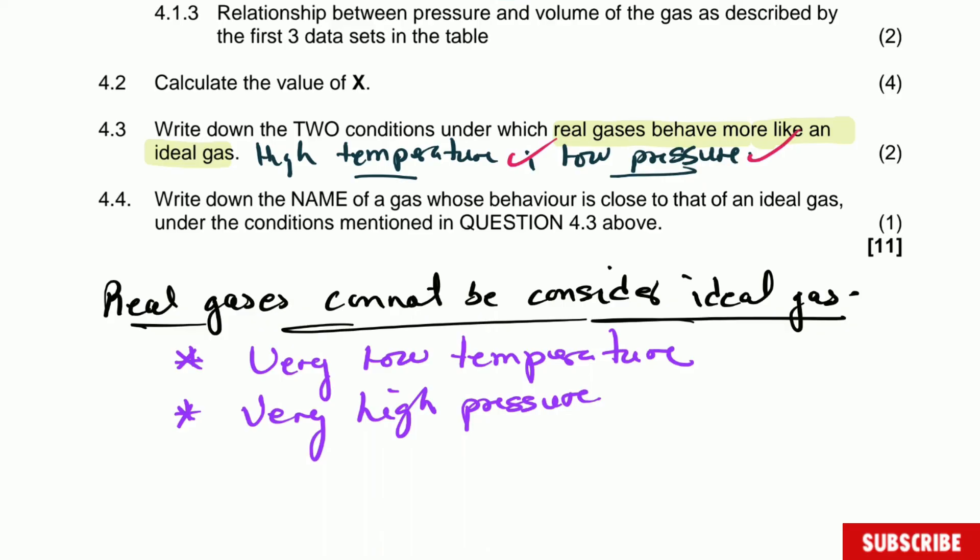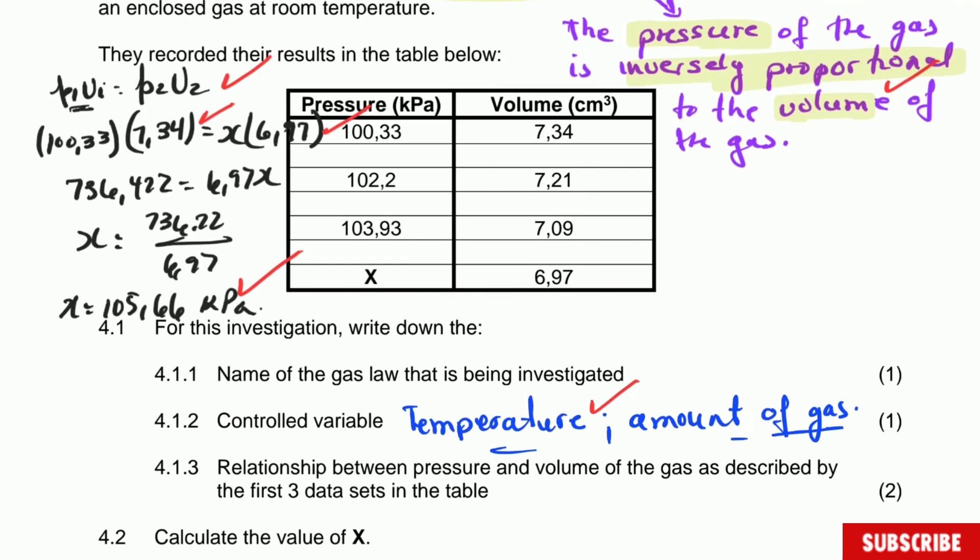Write down the name of a gas whose behavior is close to that of an ideal gas under the conditions mentioned. Those would be helium and hydrogen. If you say either helium or hydrogen you'll get one mark.